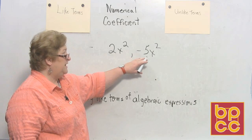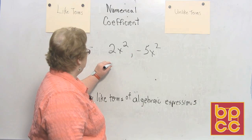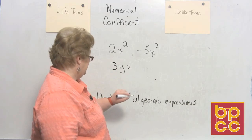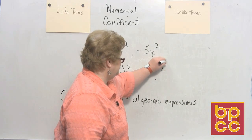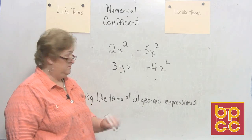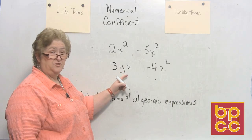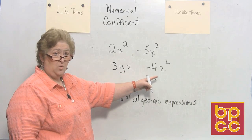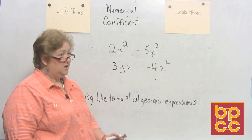The variable and the exponent have got to be the same. Now I might have 3yz and maybe a negative 4z squared. These are not alike because one is yz with an understood exponent of 1, and the other is negative 4z squared. The variables and exponents do not match up — unlike terms.